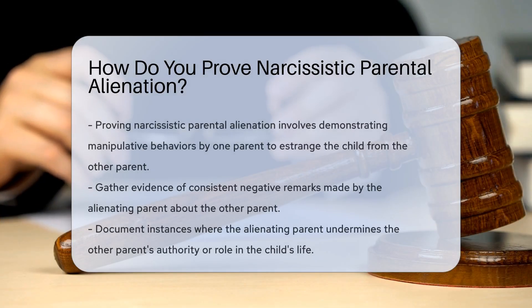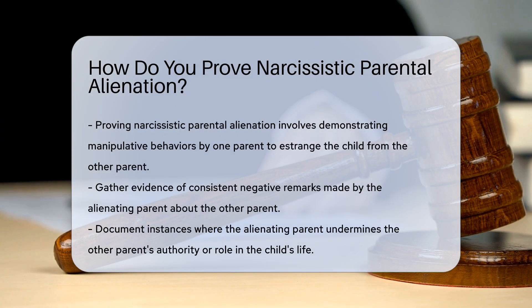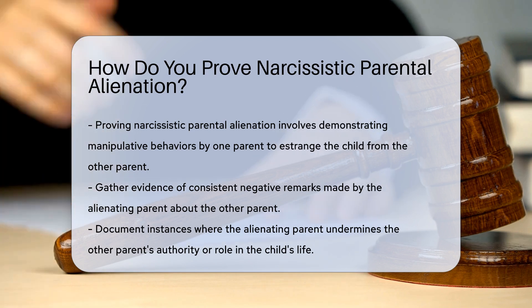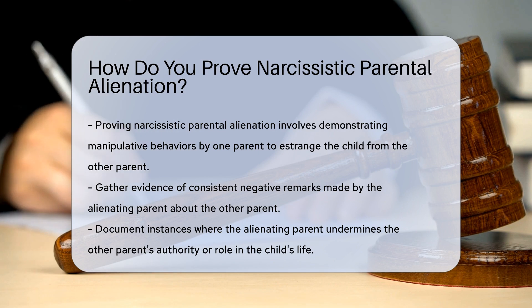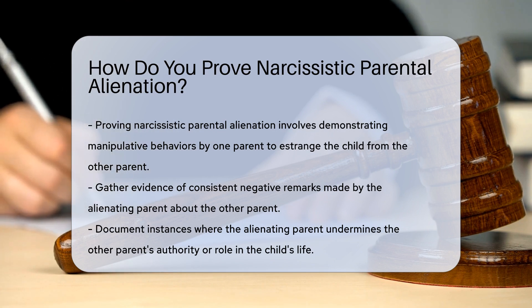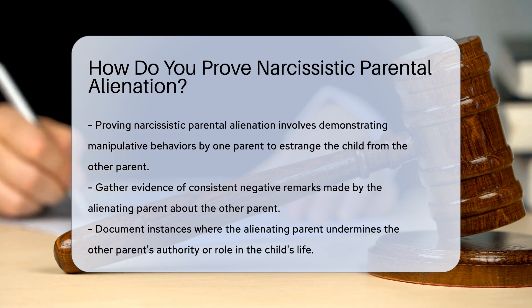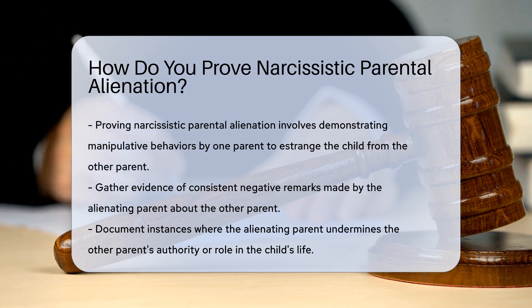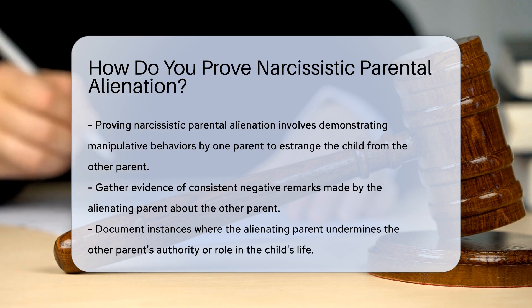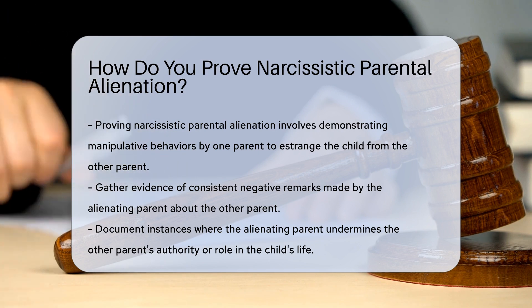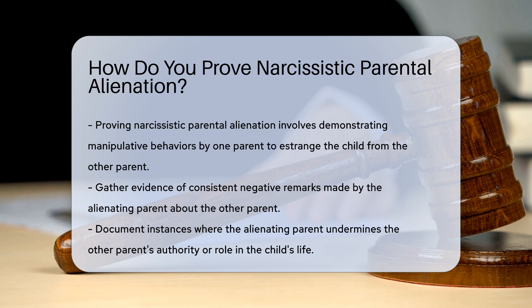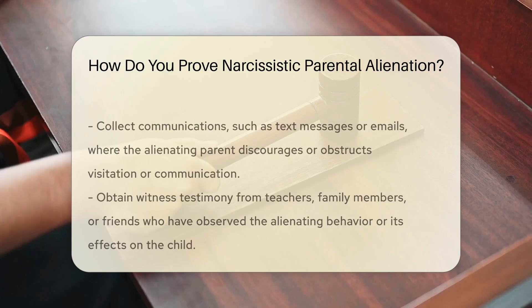Proving narcissistic parental alienation involves demonstrating behaviors that indicate manipulation by one parent to estrange the child from the other parent. First, gather evidence of consistent negative remarks made by the alienating parent about the other parent. Document instances where the alienating parent undermines the other parent's authority or role in the child's life.